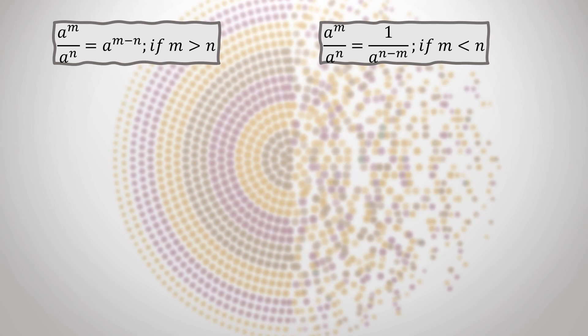Let's recall the quotient rule of the laws of exponents — it has three conditions. The first condition is when the exponent values m and n are equal, giving a raised to zero which we already covered. The second condition: if m is greater than n, simply subtract m minus n. The third condition: if n is greater than m, the result is a negative exponent, so we take the reciprocal — 1 over a raised to n minus m.